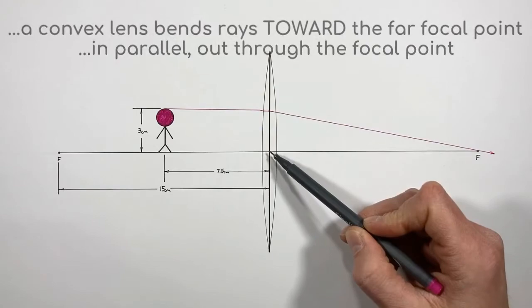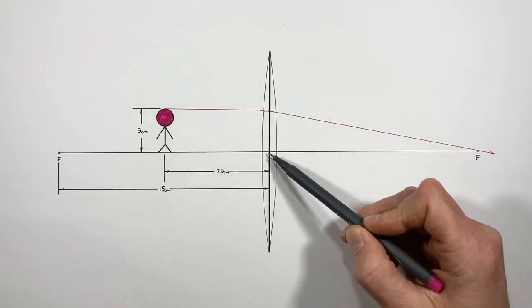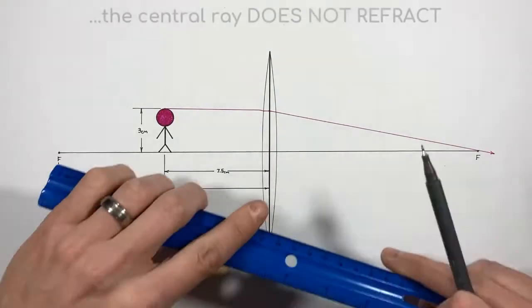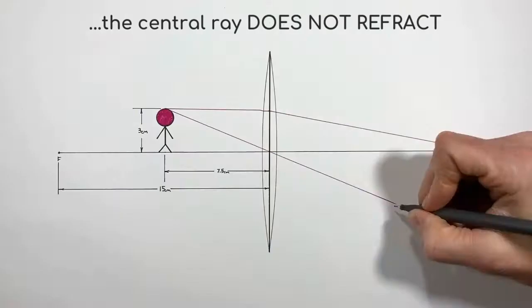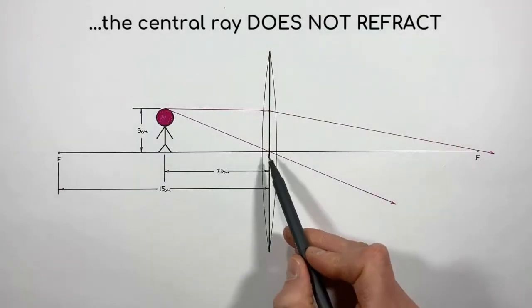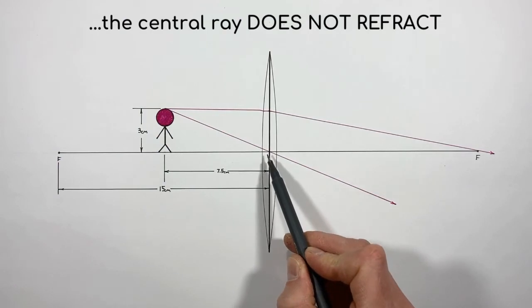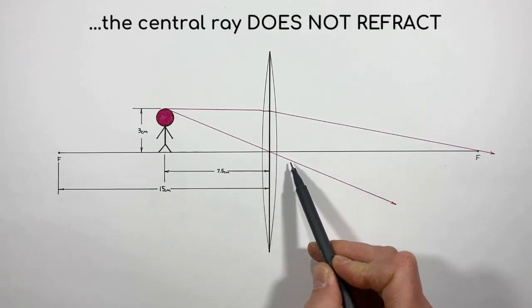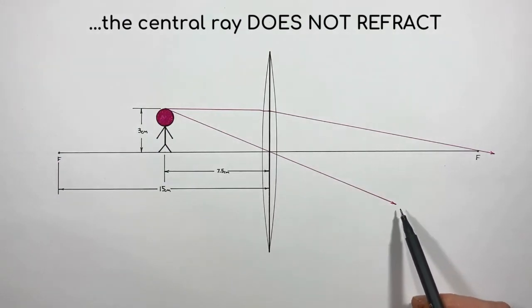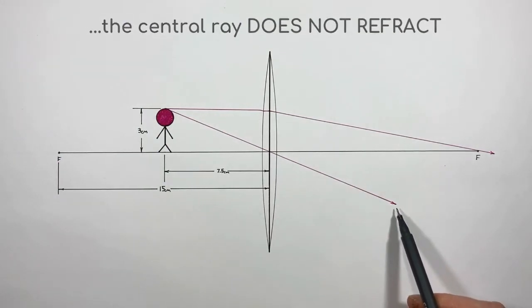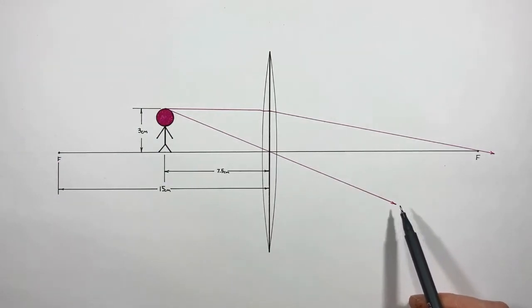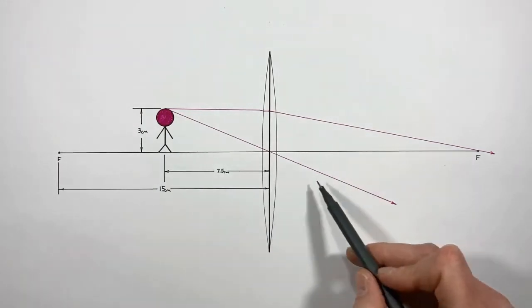The next ray we're going to draw is the central ray, which starts at the top of this object and passes through the center of the lens. When the central ray passes through the center of the lens, it doesn't refract at all — it just keeps going in the same direction.